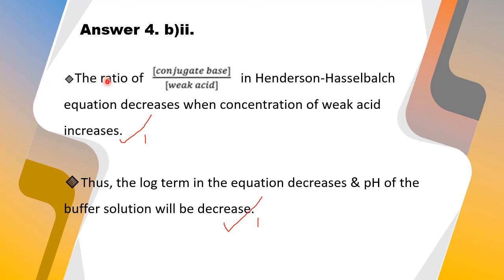The ratio of conjugate base per weak acid in the Henderson-Hasselbalch equation increases when concentration of weak acid decreases. Thus, the log term in the equation increases and pH of the buffer solution will increase.